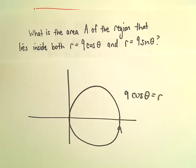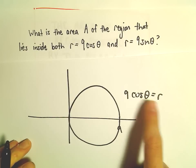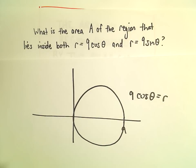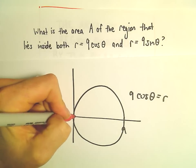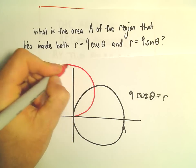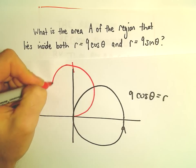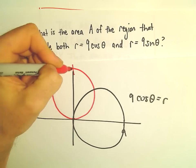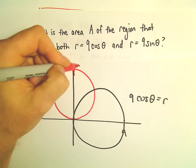You can plot this by picking points for theta and find your corresponding value for r. The graph of 9 sine theta is going to look similar, except it's going to be on the positive y-axis. This would be up here at 9 as well.